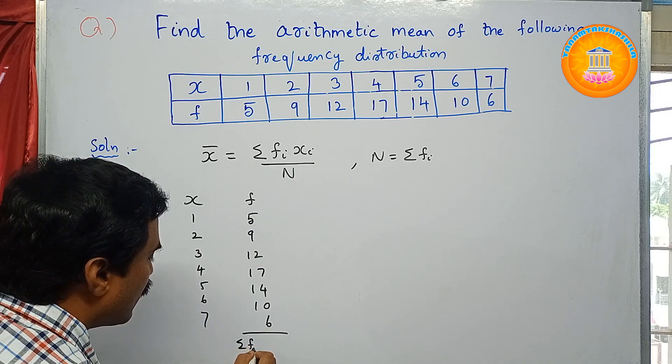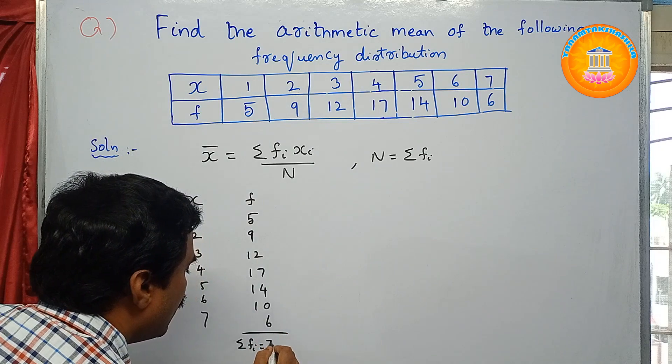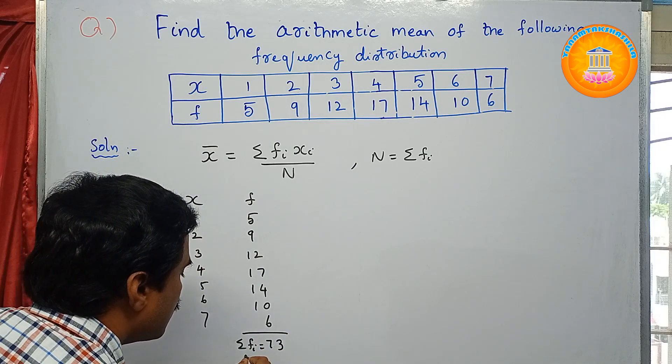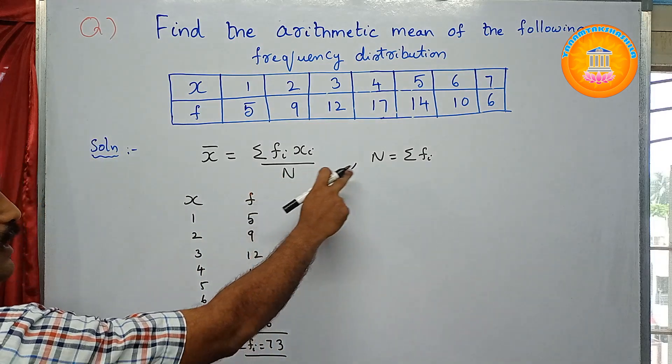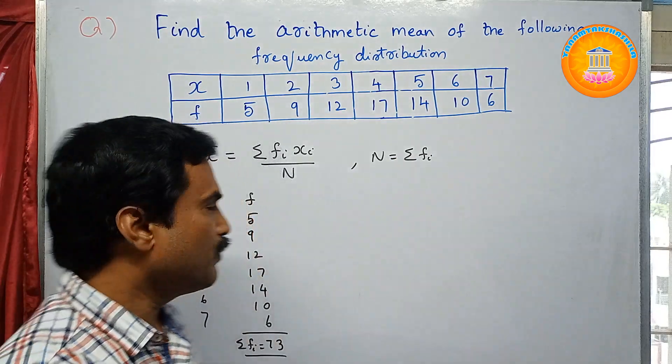Now we add all these f values, that is Sigma f_i. When you add all these values we get 73. So this is nothing but the n value, that is n equals Sigma f_i. So we got one value.